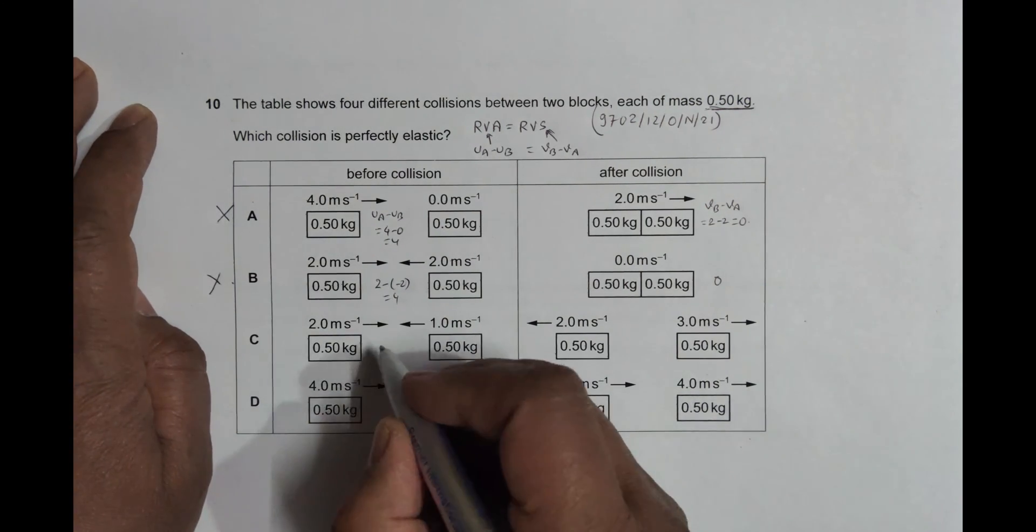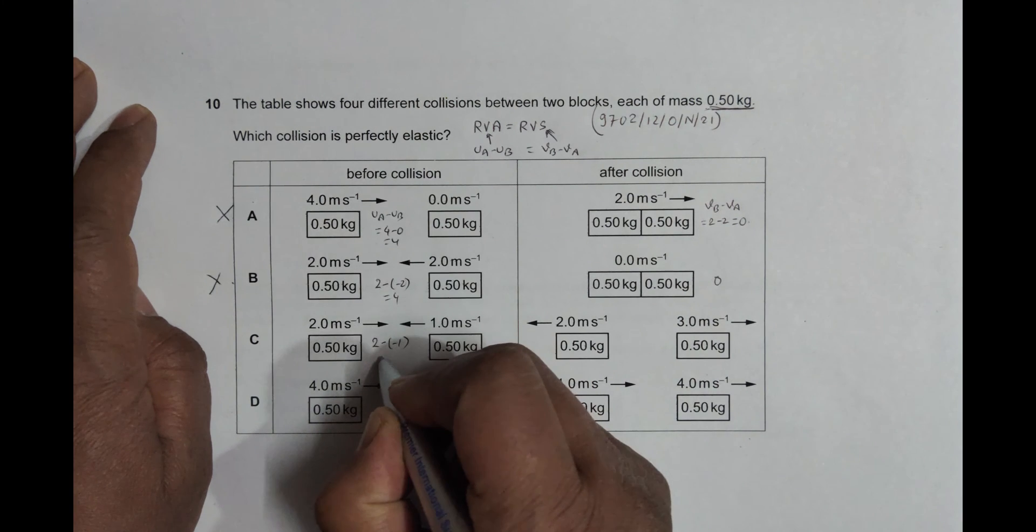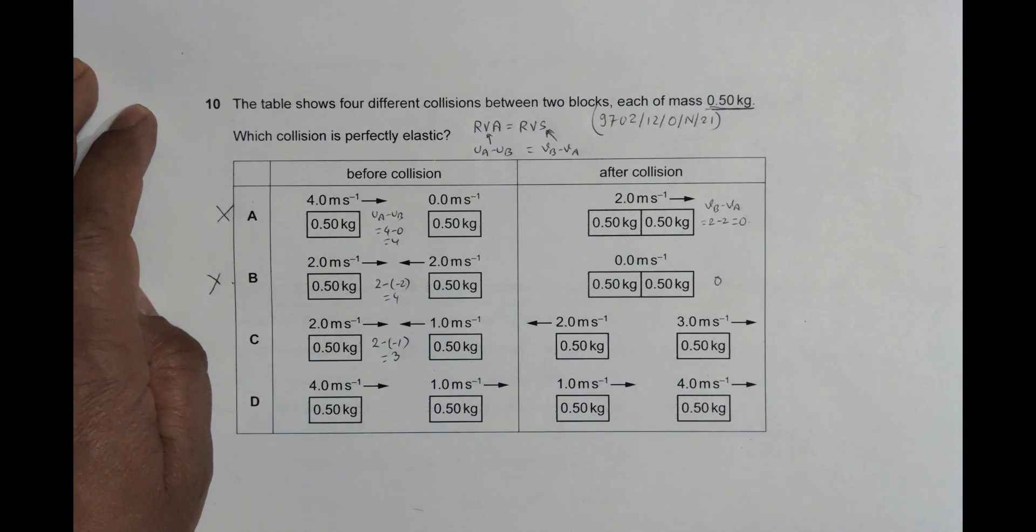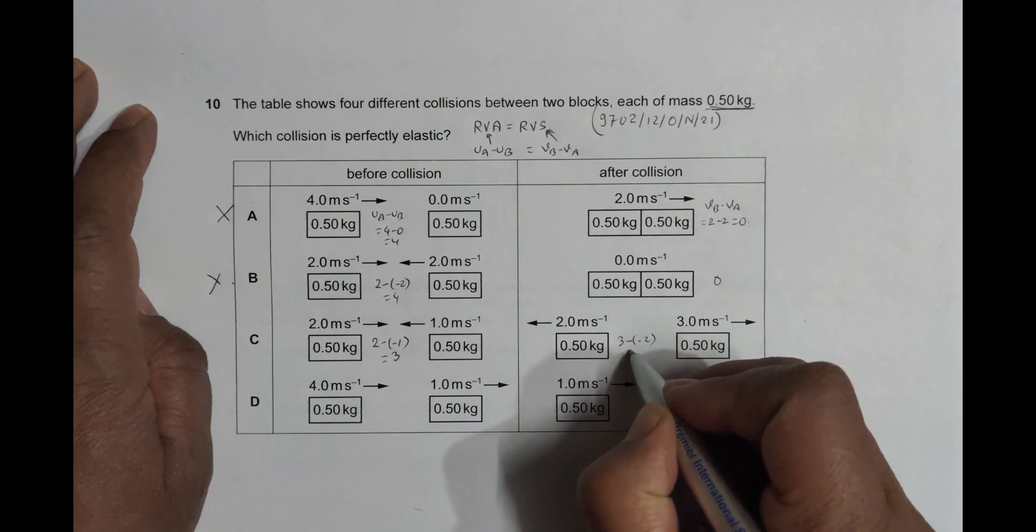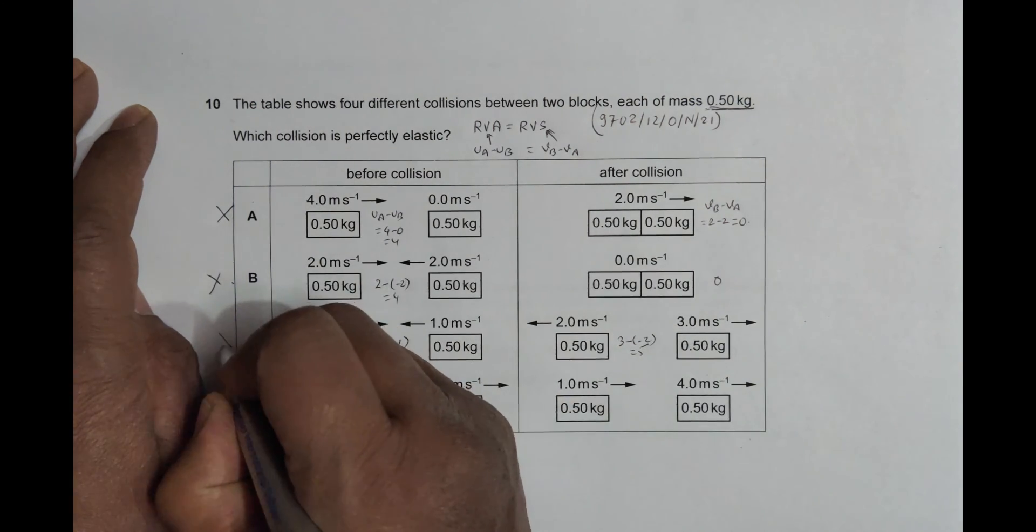Let's see the third one. So here it is 2 minus negative 1, equal to 3, and v_b first is 3 minus negative 2, equal to 5. Not equal, so that doesn't qualify.